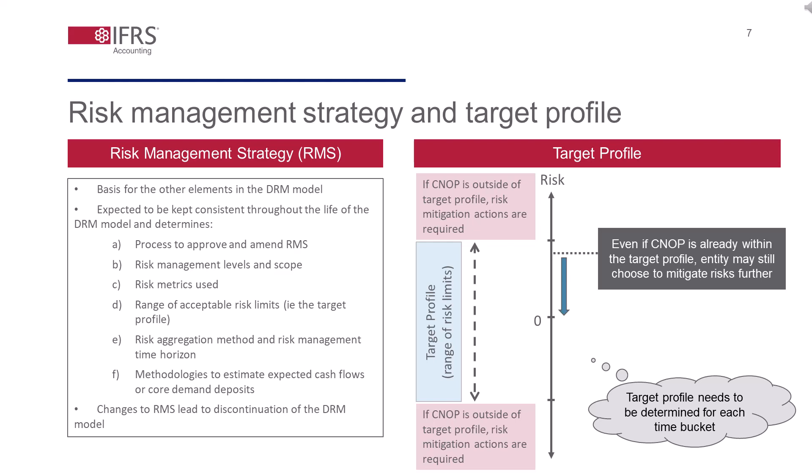Consistent with the IASB's previous tentative decisions, the specification and documentation of the target profile as one of the qualifying criteria to apply the DRM model should be done at the initial designation. This means any change to an entity's risk management strategy that results in a change to the target profile would result in a discontinuation of the DRM model. However, some stakeholders questioned this rigorous application of the discontinuation requirements, stating that it should be possible to tweak the risk limits on an ongoing basis depending, for example, on new business volume or the development of new products. Staff plan to discuss the implications of this at a future meeting.